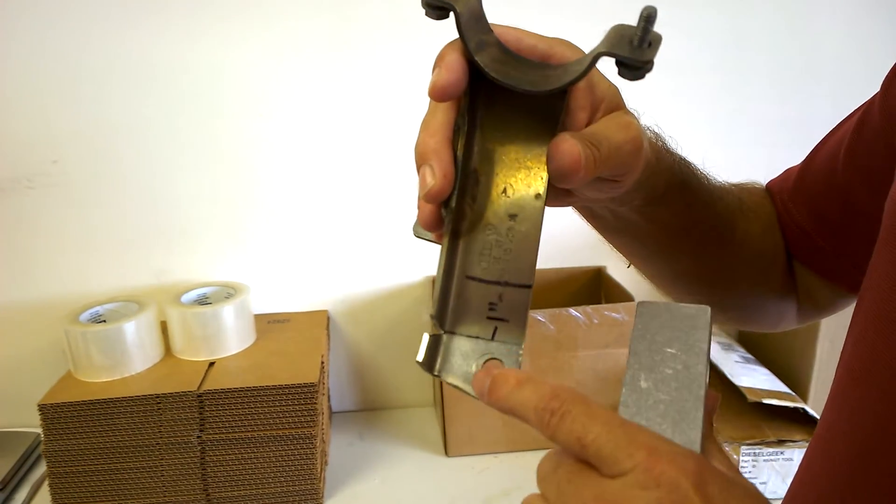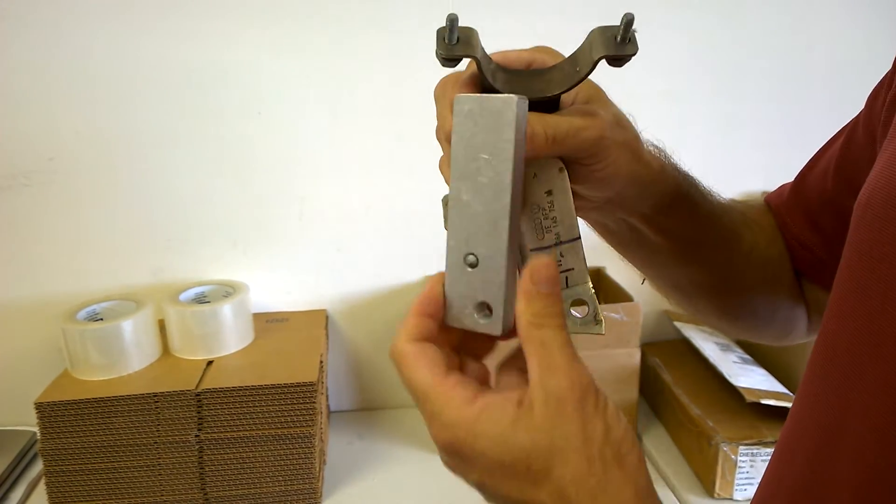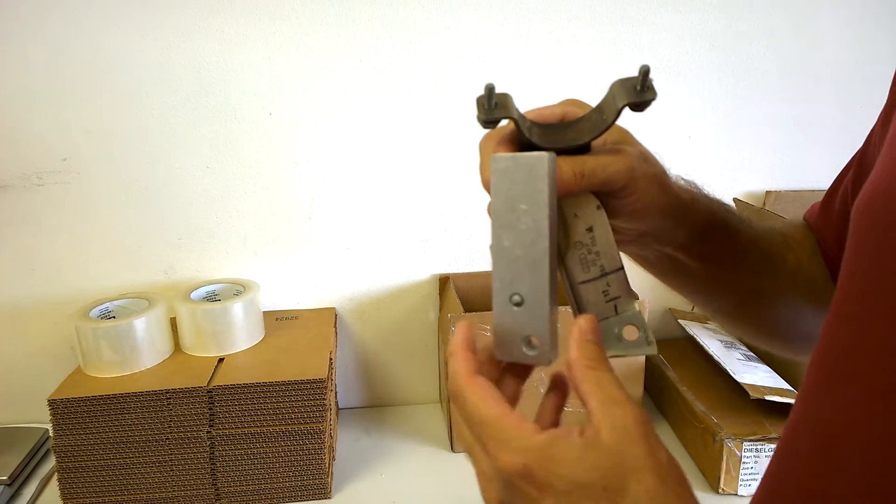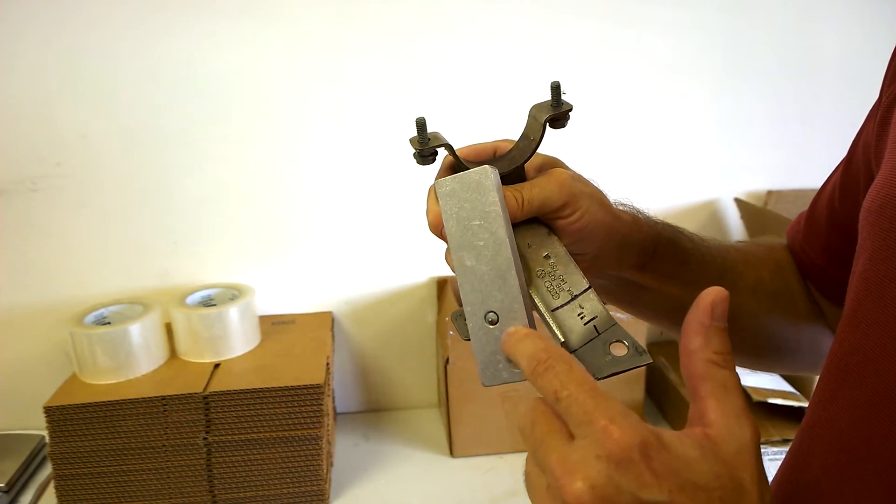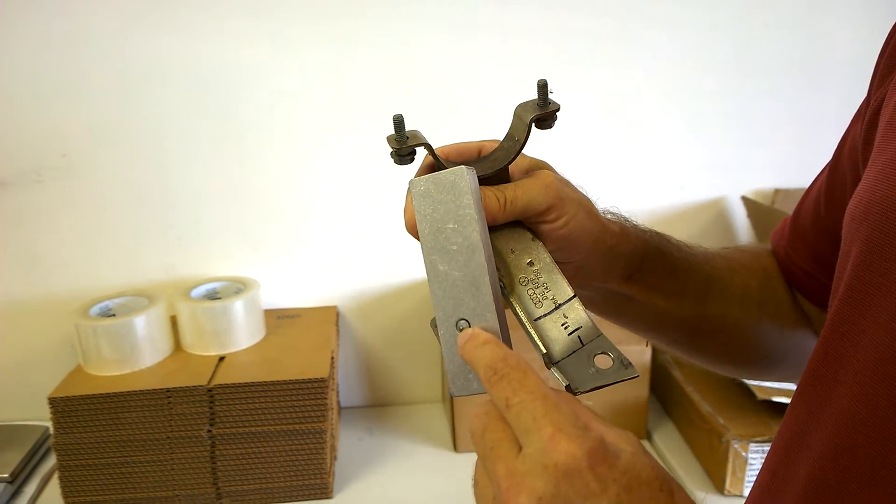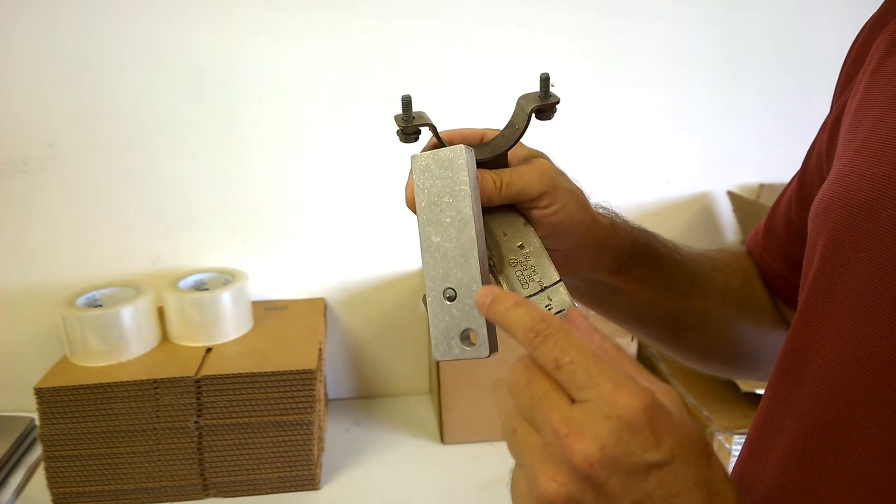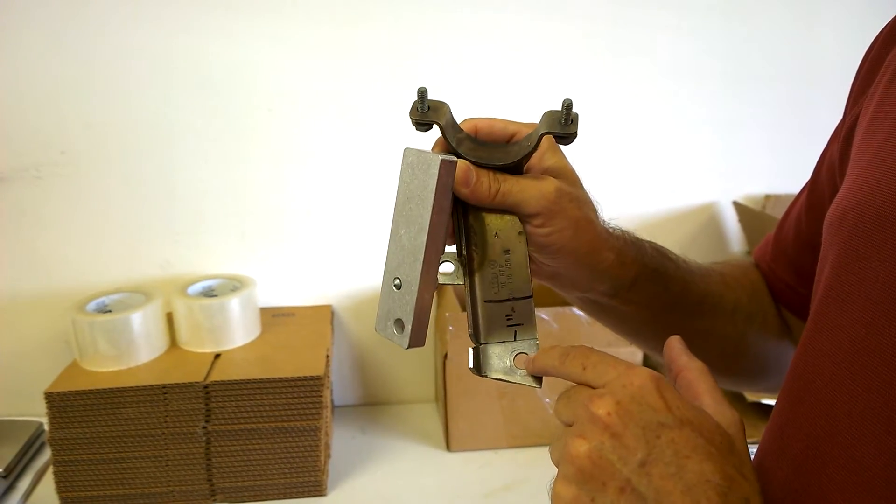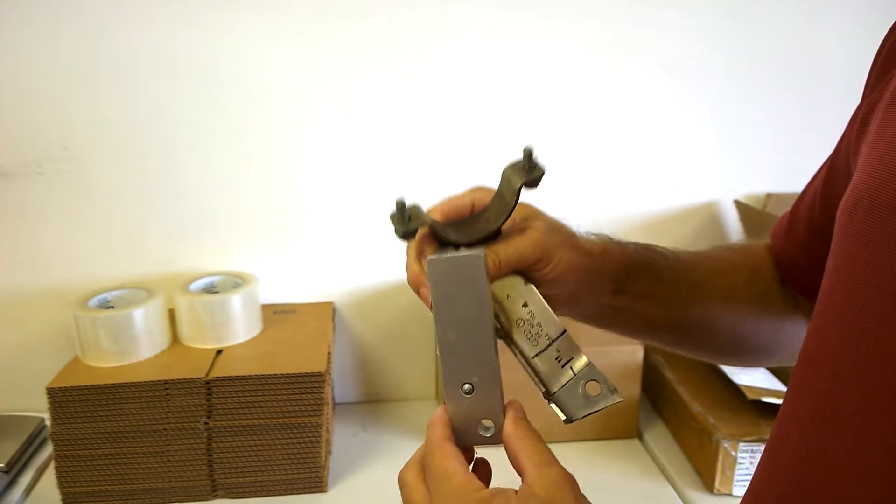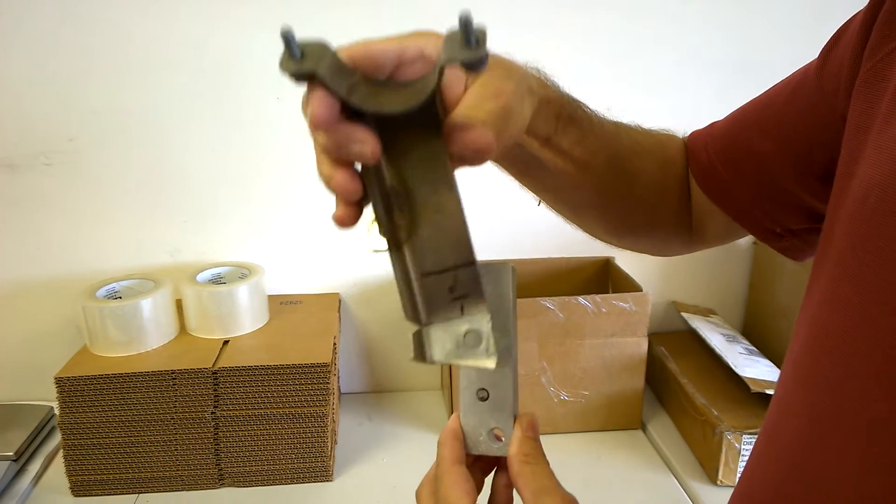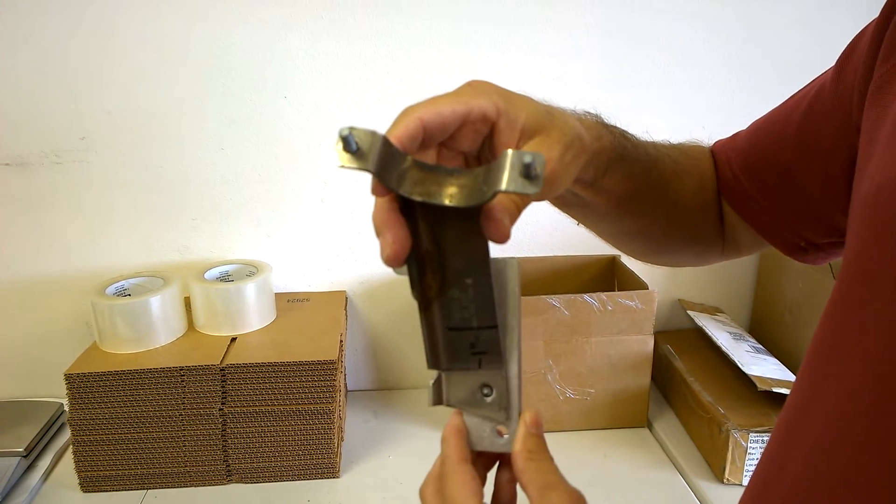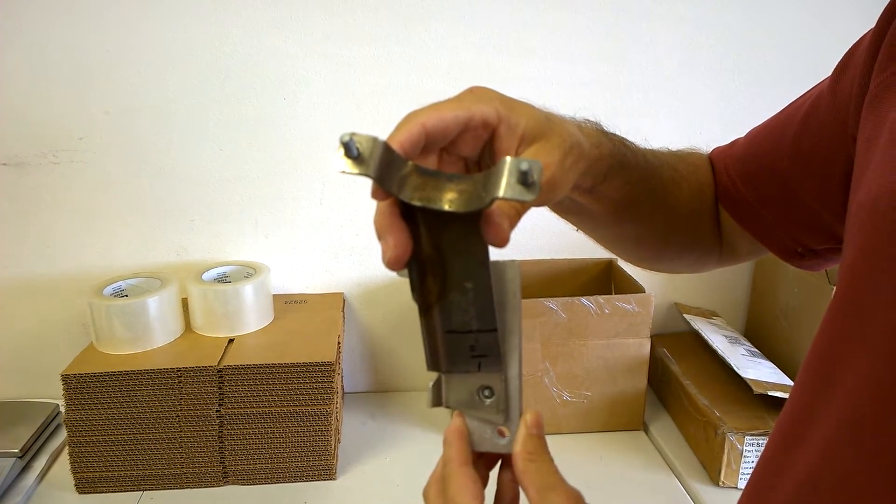So what you're going to do after you get this, pretend that this hole isn't here, is you're going to bolt the Van Gogh bracket to the engine. And this bolt is going to have a pointed head pointing out. This pointy head is going to mark where you're going to drill the hole in your modified bracket. So you're going to bolt this to the engine with the bolt pointed out, and then when you bolt this bracket, the intercooler pipe bracket on, it's going to rest against that pointy bolt.